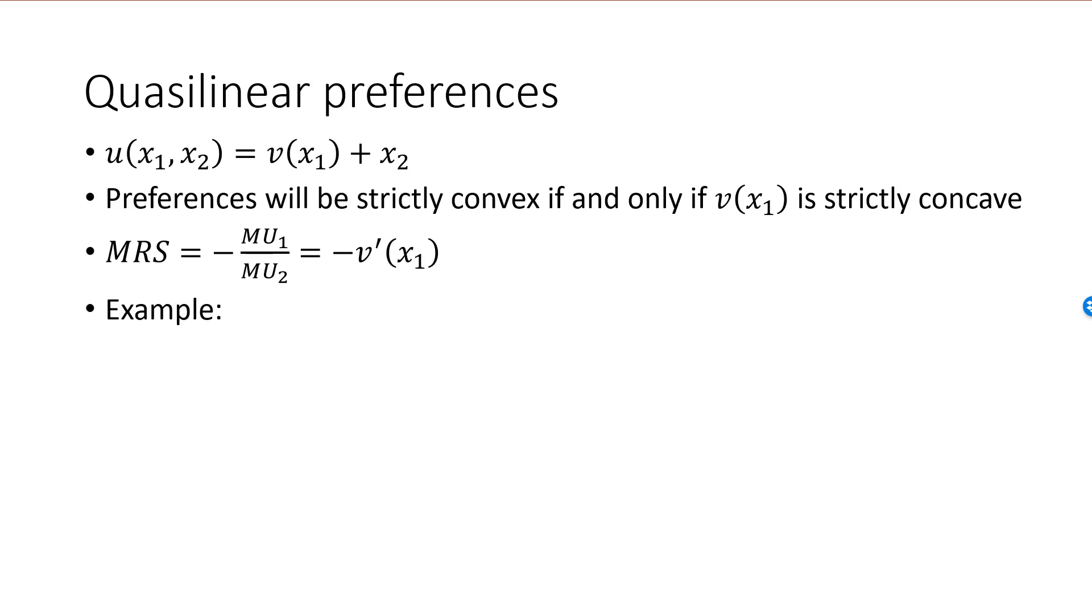Here is an example. If v of x1 is square root of x1, then since v is strictly concave, preferences are well behaved. MRS is minus the derivative of v, which is minus 1 divided by 2 times square root of x1. And we set this equal to minus p1 over p2. Multiply both sides by minus 2, and square both sides. We then have 1 over x1 is equal to 4p1 squared divided by p2 squared. Invert both sides, and we find that the optimal choice for x1 is p2 squared divided by 4p1 squared, assuming that this quantity is affordable.